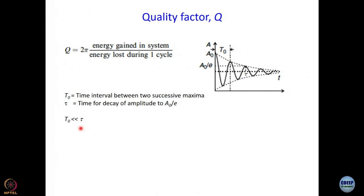Let me write this: 2 pi, then what is energy gained in the system? A0 square. What is energy lost in one cycle? It will be A0 square minus A0 square into e to the power minus 2 beta by T0. For now, don't worry about what beta is. We will have to come back to that. We can go to the final expression. A0 square will cancel. You are left with 2 pi divided by 1 minus e to the power minus 2 T0 by tau.